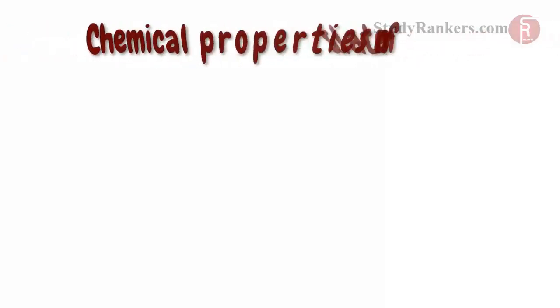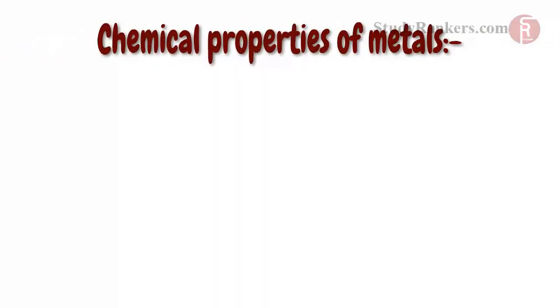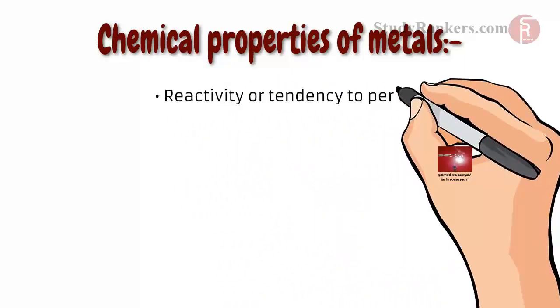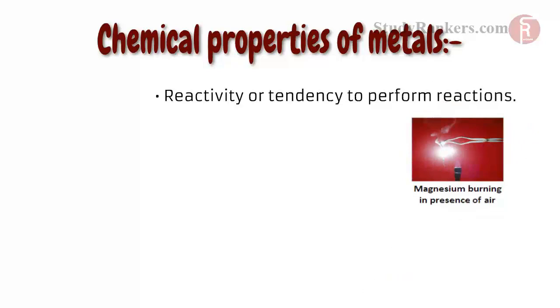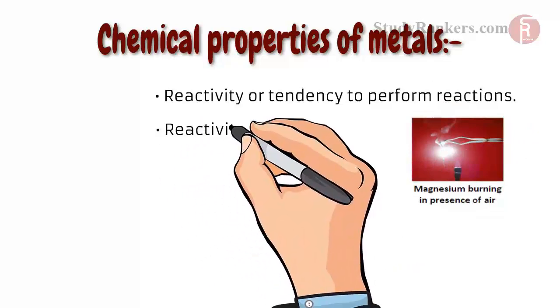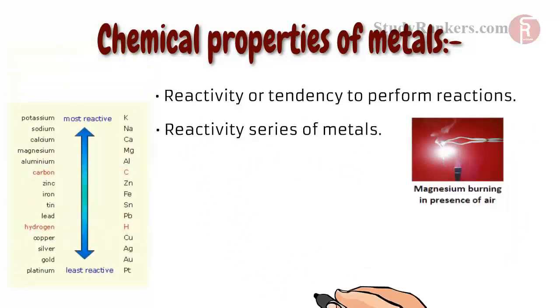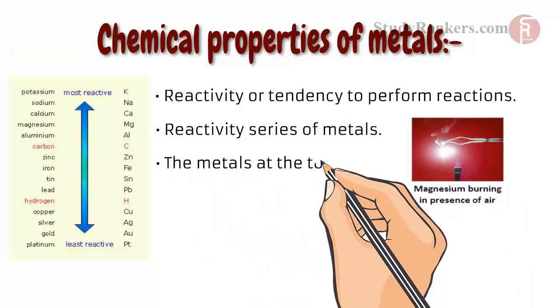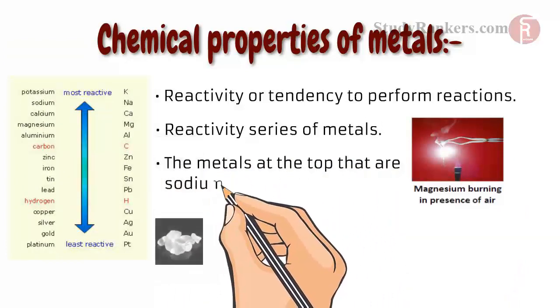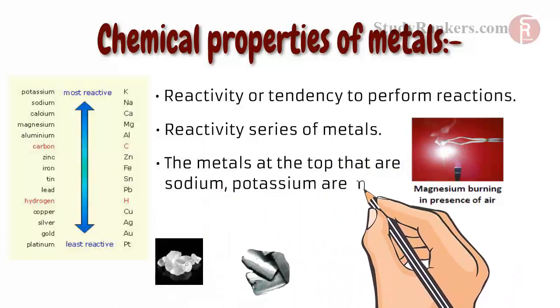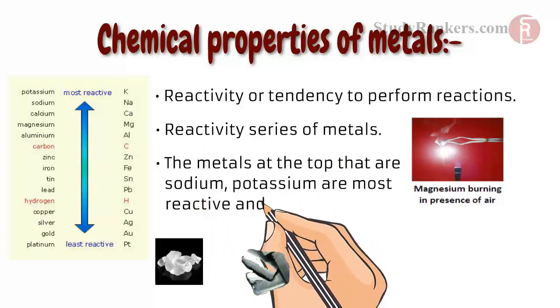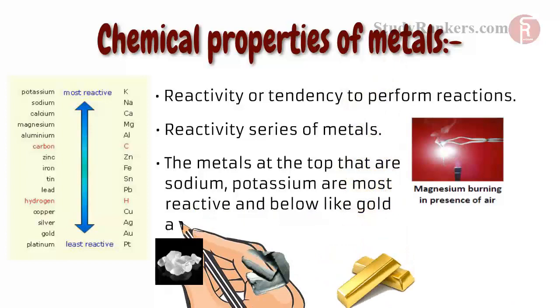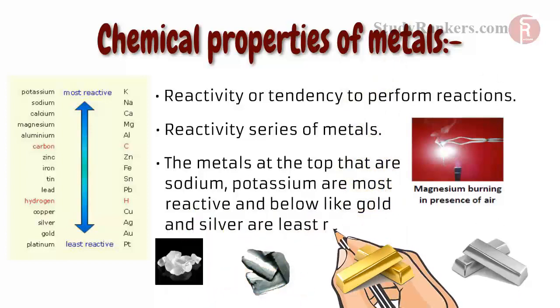Let's discuss some chemical properties of metals. The chemical properties of a metal depend on its reactivity or tendency to perform reactions. Here is a reactivity series of metals. The metals at the top, that are sodium and potassium, are most reactive, and below like gold and silver are least reactive.